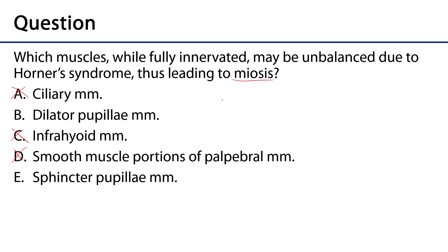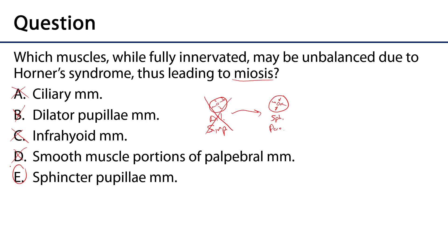Dilator pupillae muscles cause the pupil to dilate — to get larger — whereas sphincter pupillae muscles cause the pupil to constrict. Recall that the dilator pupillae muscles are under sympathetic control and the sphincter pupillae muscles are under parasympathetic control. During Horner's syndrome, the dilator pupillae muscles are knocked out and we have unbalanced sphincter pupillae muscles, causing constriction. The correct answer is E, sphincter pupillae muscles.